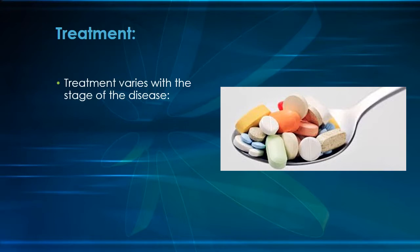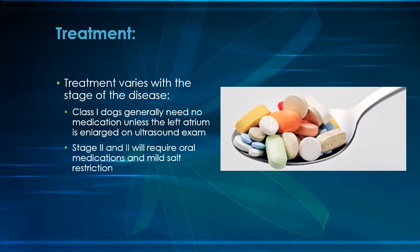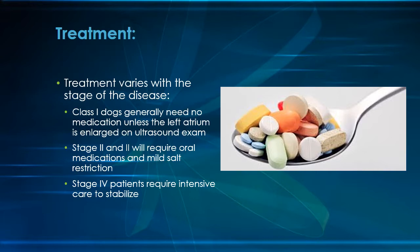Treatment for mitral disease varies with the stage. Class 1 pets typically require no treatment unless ultrasound shows enlargement of the heart chambers, particularly the left atrium. Class 2 and 3 pets require oral medications and some dietary restriction. Class 4 pets require extensive treatment, usually in an intensive care situation, to get them stabilized, and despite aggressive therapy, many of these pets will succumb to their heart failure.